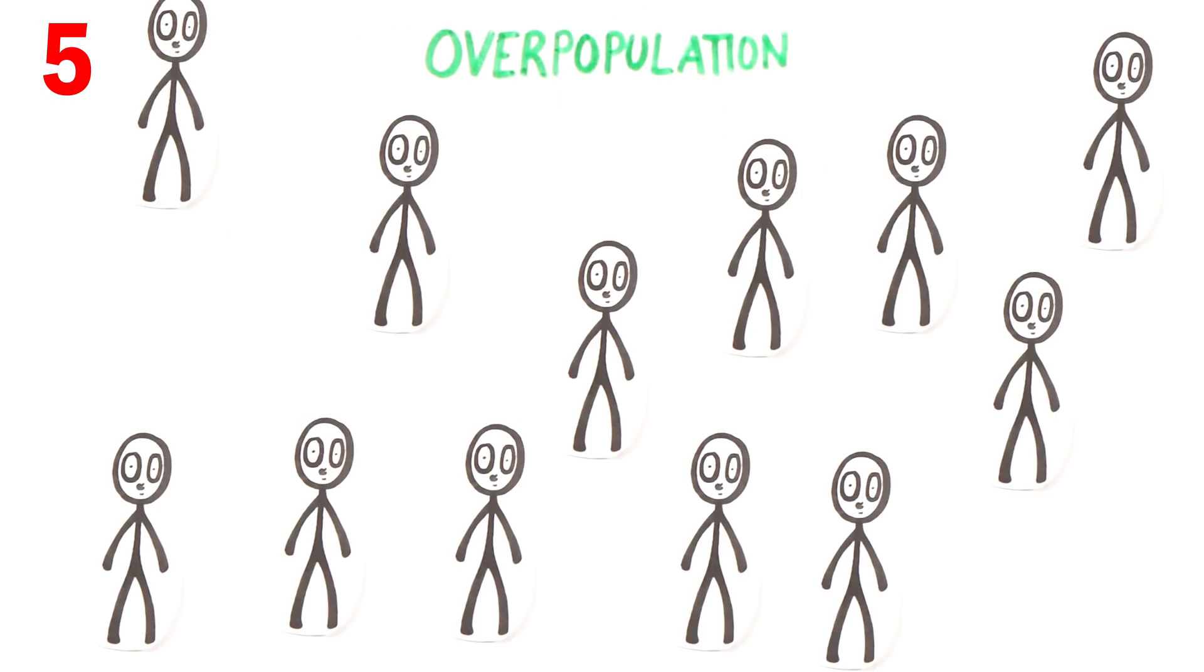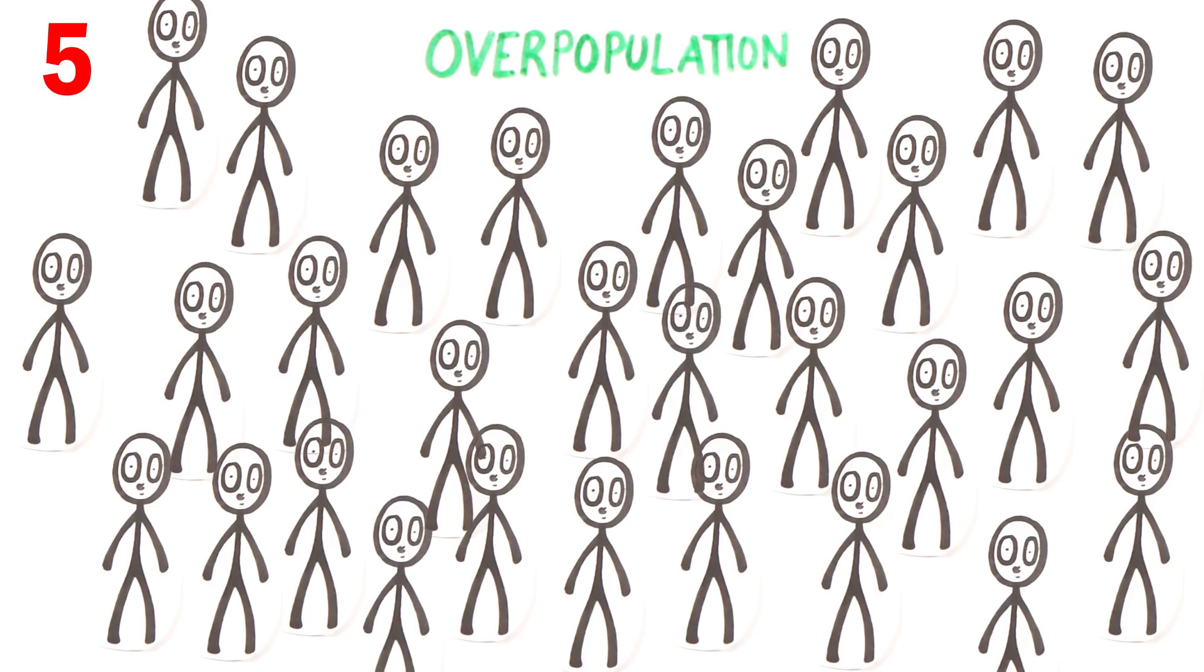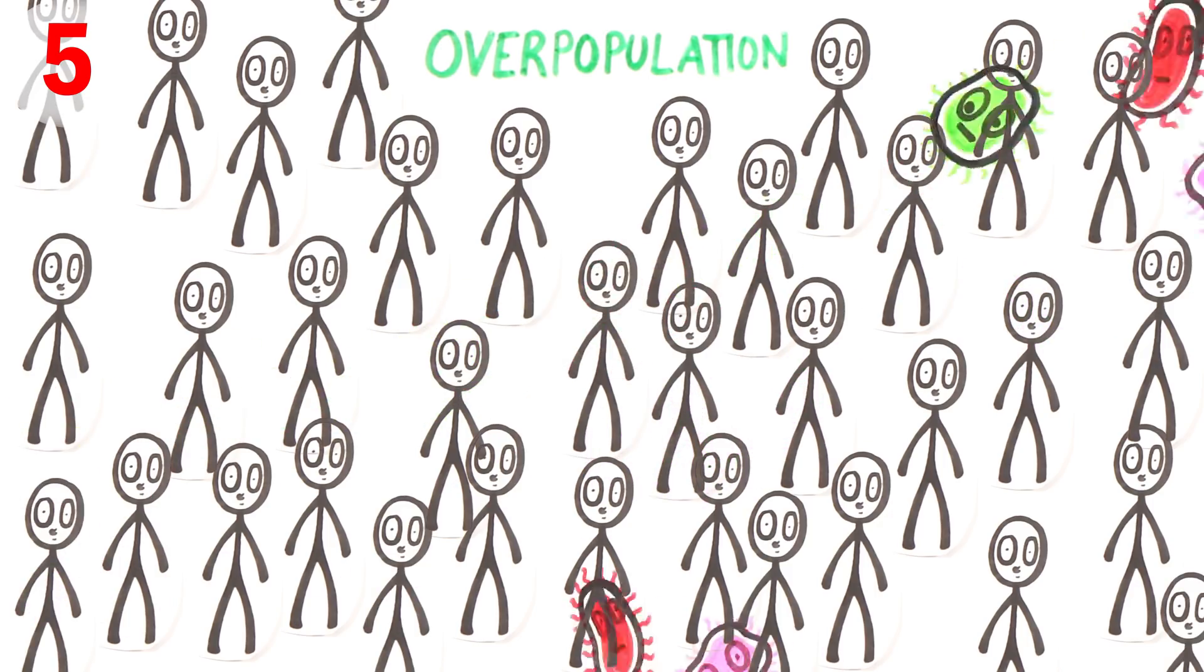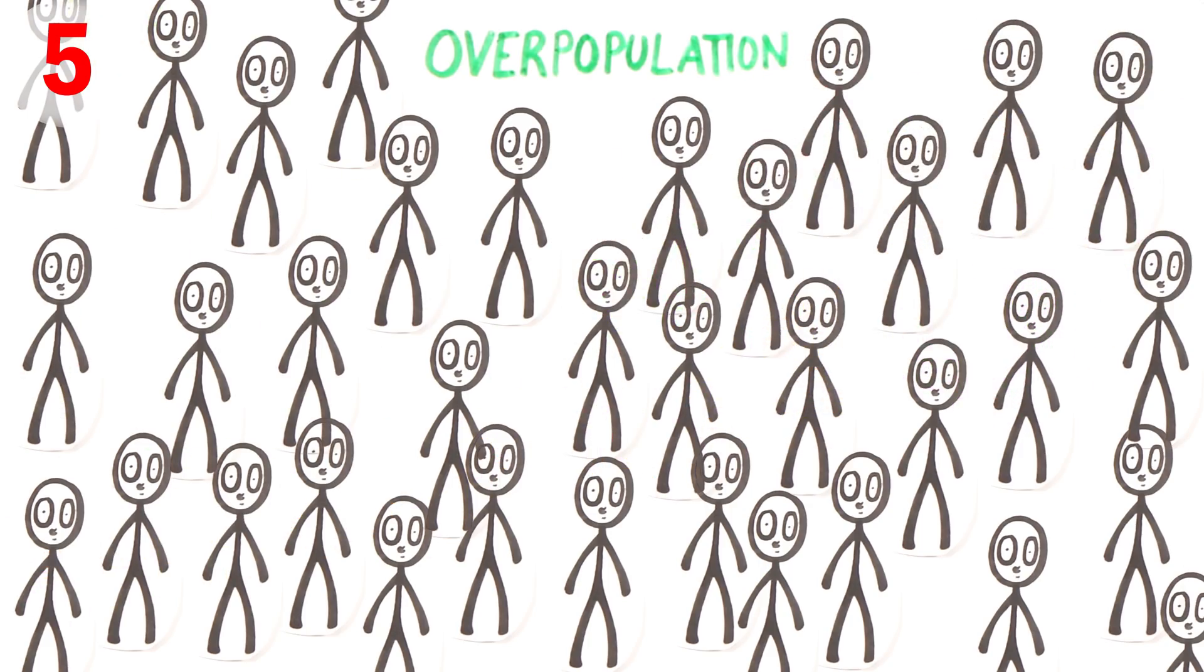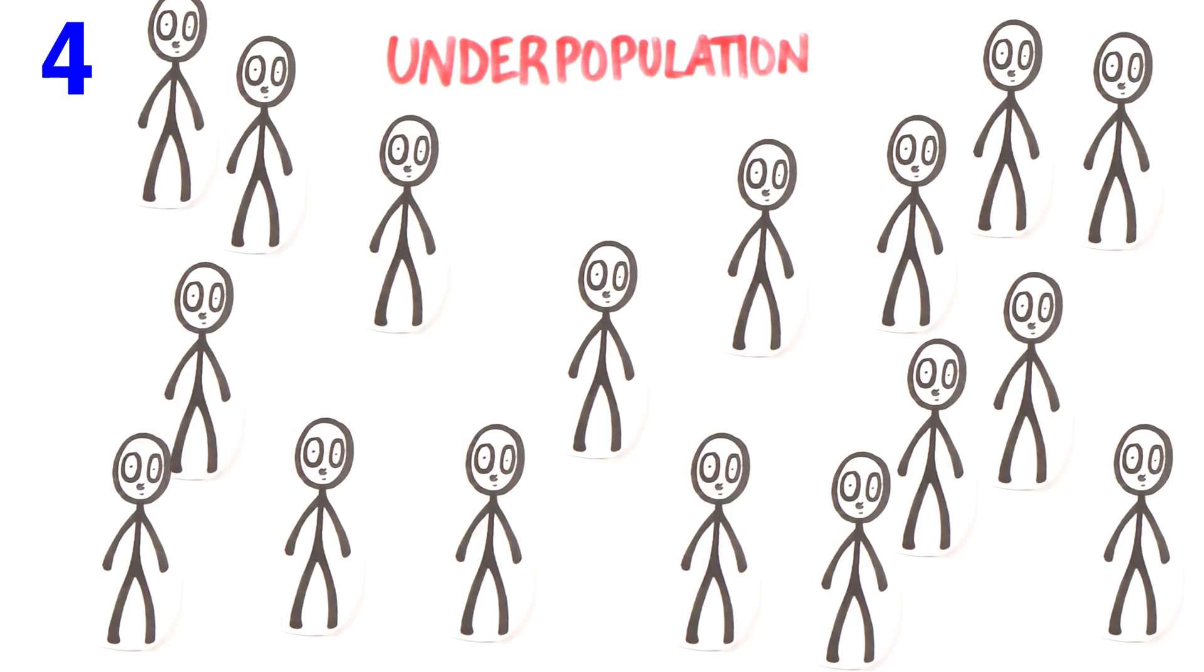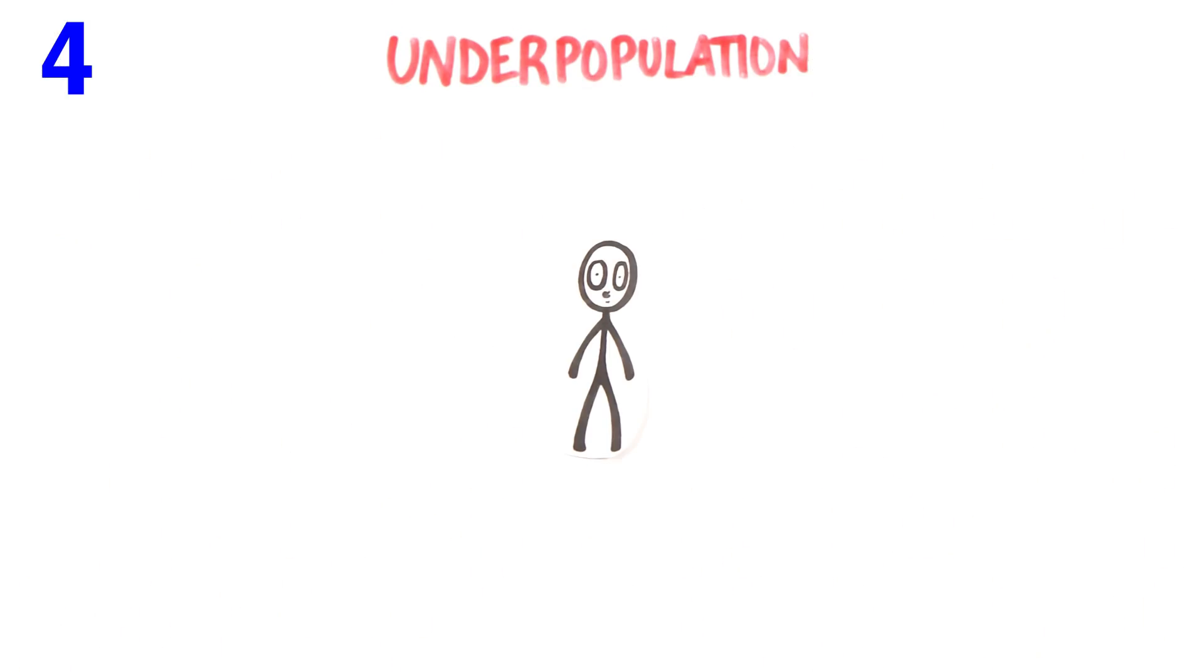Overpopulation can outstrip Earth's capacity to produce food and other resources and amplify the threat of infectious pandemics due to high densities, perhaps with bioengineered diseases. Conversely, evidence is already pointing to declining fertility rates. Will we see the human population gradually die out from lack of births?